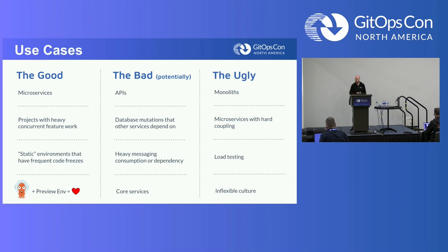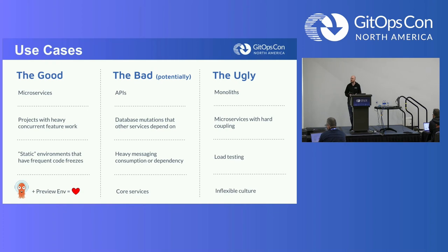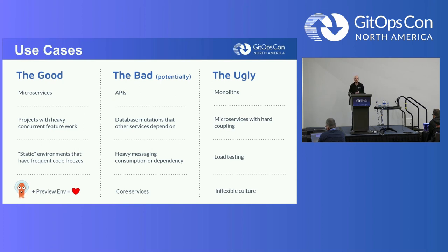If you have microservices with hard coupling, you probably didn't really do microservices right — but it happens all the time. If your preview environment to test one service requires you to bring in 20 other microservices, you have kind of a problem — it's probably an architectural problem, but it's also a problem for preview environments. Load testing is interesting too — preview environments can give you some cursory information, but it's never going to be very accurate compared to your production resources, since it's very difficult to generate exact load without the exact same resource specifications.